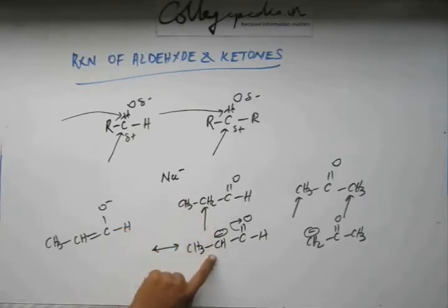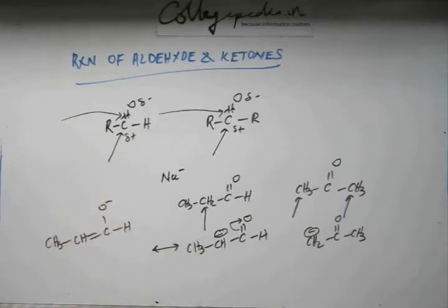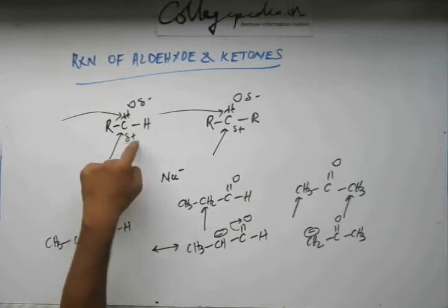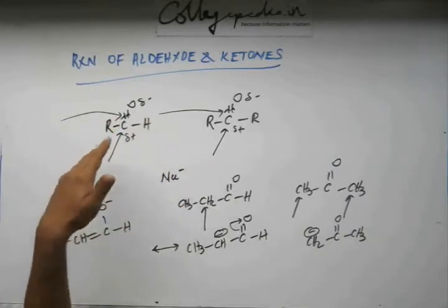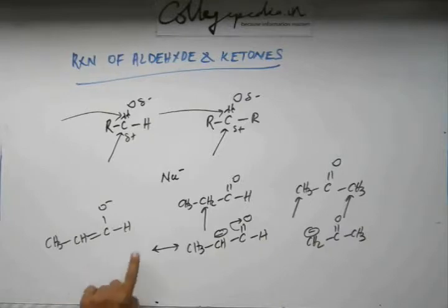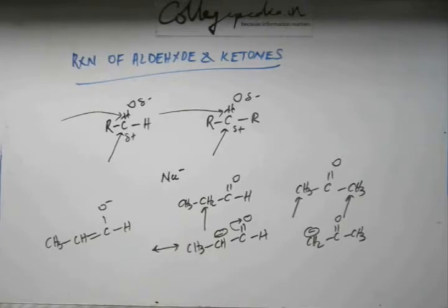A base can come and abstract hydrogen from the alpha carbon. So there are three reactive sites in both carbonyl compounds — aldehydes and ketones. As we see the reactions of aldehydes and ketones, all reactions will occur at any one of these three sites: site one is the carbonyl carbon, where an electron-rich species attacks; site two is the pi bond with its loosely held electrons; and site three is the alpha carbon, whose hydrogen is acidic due to resonance.